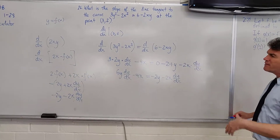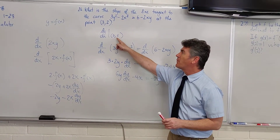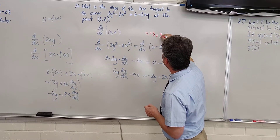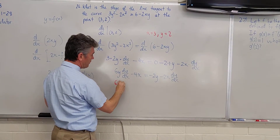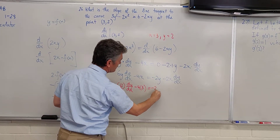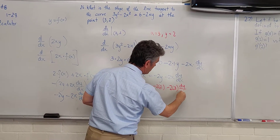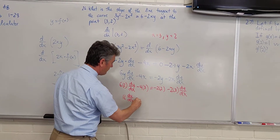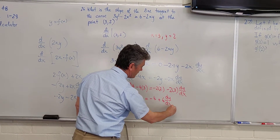Now, rather than solving for dy/dx first, a shortcut is to immediately replace x with 3 and y with 2. Don't wait — you're wasting time, and you might even make an algebraic mistake. So replacing y by 2: 6 times 2 dy/dx minus 4 times 3 equals negative 2 times 2 minus 2 times 3 dy/dx, which simplifies to 12 dy/dx minus 12 equals negative 4 plus 6 dy/dx.